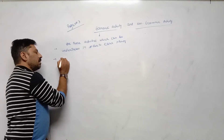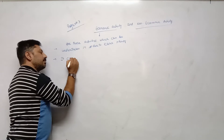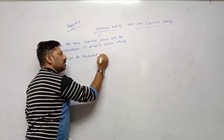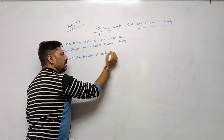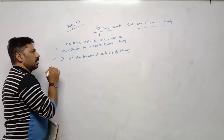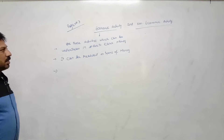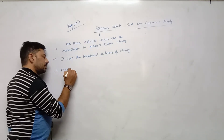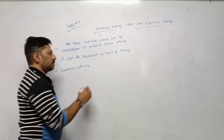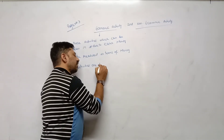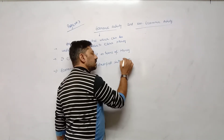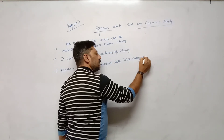Economic activity can be measured in terms of money. Economic activities are classified into three categories: Business, Industry, and Commerce.